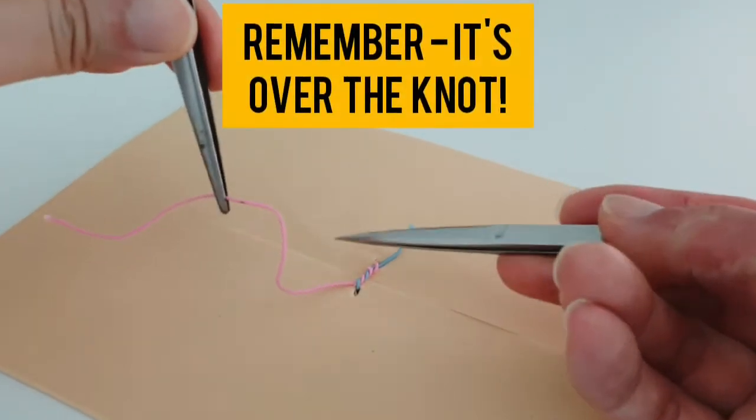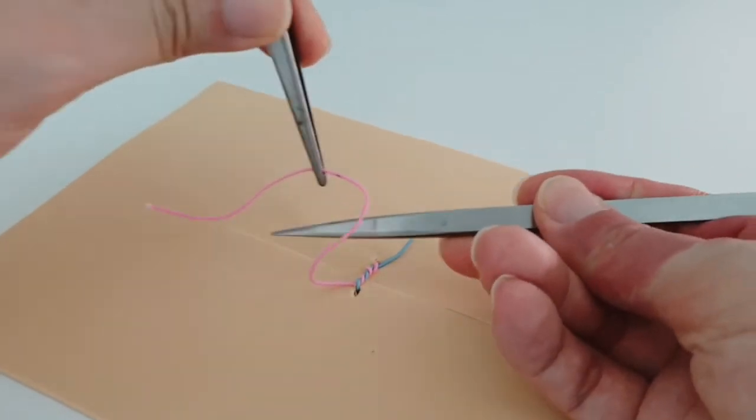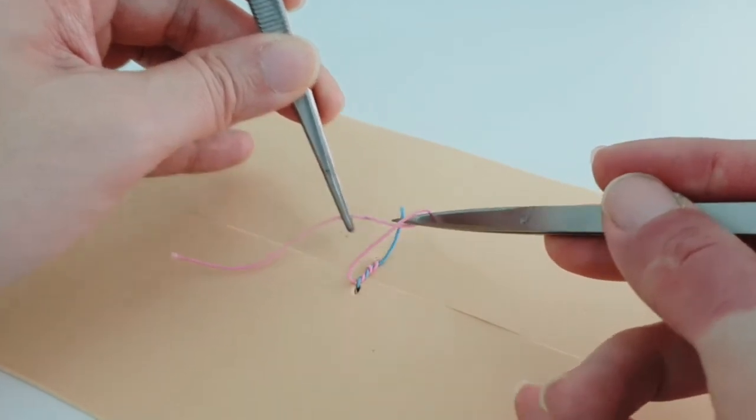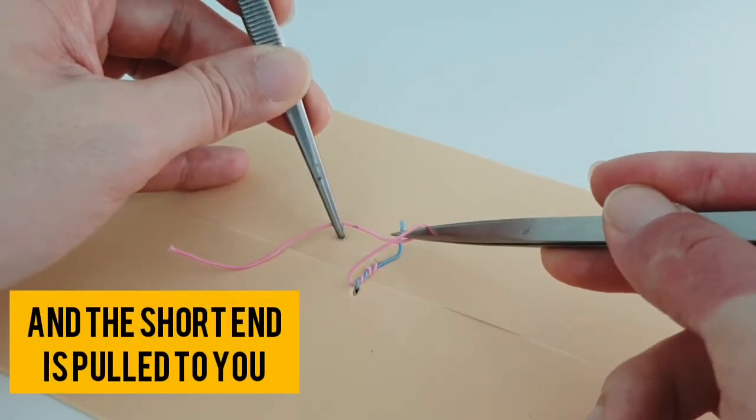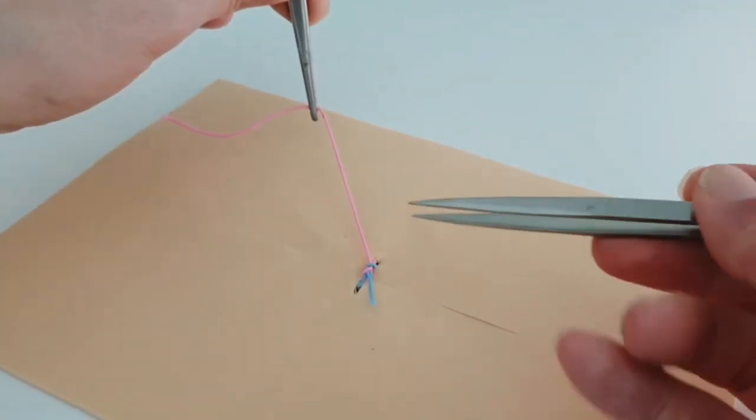Again, remember you want to throw over your knot and that's where your knot is. So you throw it over the needle holder. And you're going to be pulling the short end, which was away from you. Now you're going to put it back towards you.